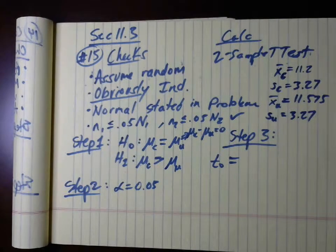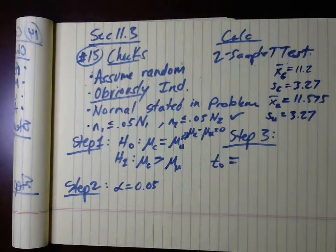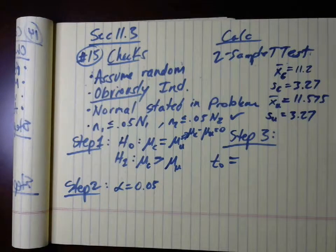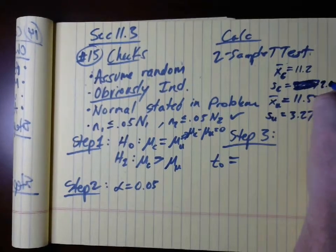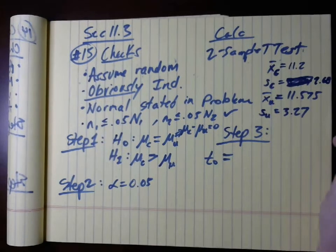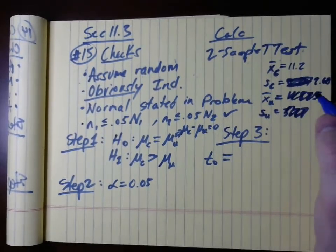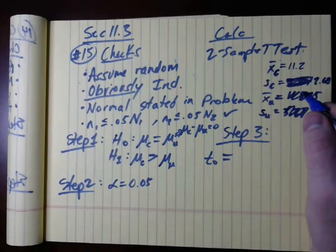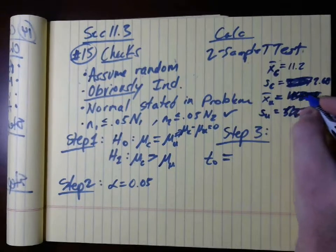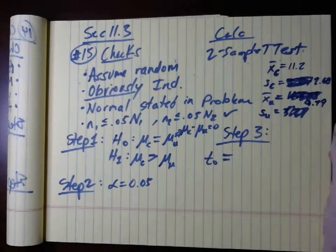Wait - I just ran L1 again by mistake. Let me check the uncarpeted data: 8.2, 7.1, 13, 10.8, 10.1, 14.6, 14... I was wrong. Corrected values: s_c = 2.68, x-bar_u = 9.79, and s_u = 3.21.